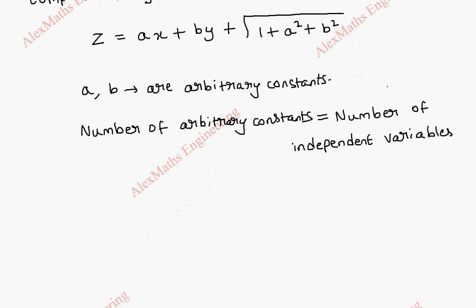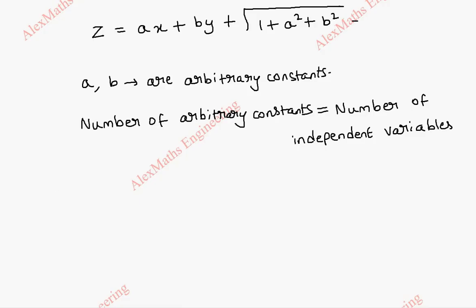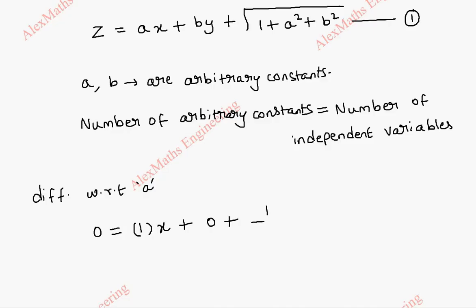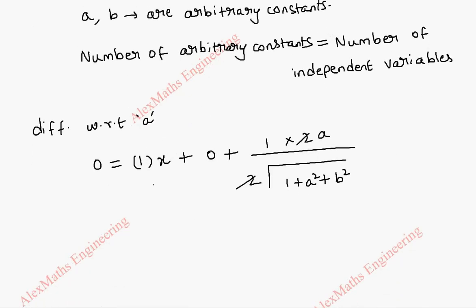Now, we are going to find the singular solution. For getting the singular solution, we have to take this equation and differentiate with respect to the arbitrary constant a first. So, other than a, the remaining are treated as constants. z differentiation is 0, a differentiation is 1 and x is as it is, by is totally a constant so 0. The square root differentiation is 1 by 2 root of 1 plus a square plus b square, and differentiation of this term gives 2a. We can cancel this, and from this we take x to the other side. So, minus x equal to a by root of 1 plus a square plus b square.